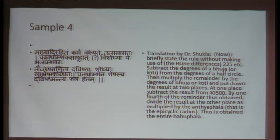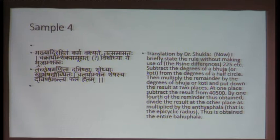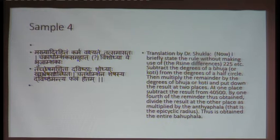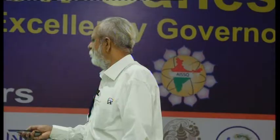Subtract the degrees of a Bhuja or Koti — Bhuja and Koti being the two sides of a right-angle triangle — from the degrees of a half circle, then multiply the remainder by the degrees of Bhuja or Koti and put down the result at two places: one for the numerator and one for the denominator. At one place subtract the result from 40,500 by one-fourth of the remainder. Divide the result at the other place as multiplied by the Antya Phala, that is the epicyclic radius. Thus is obtained the entire Bhu Phala. The summary: I am having a rational function which is a very close approximation to the sine function, as we will see in the next slide.